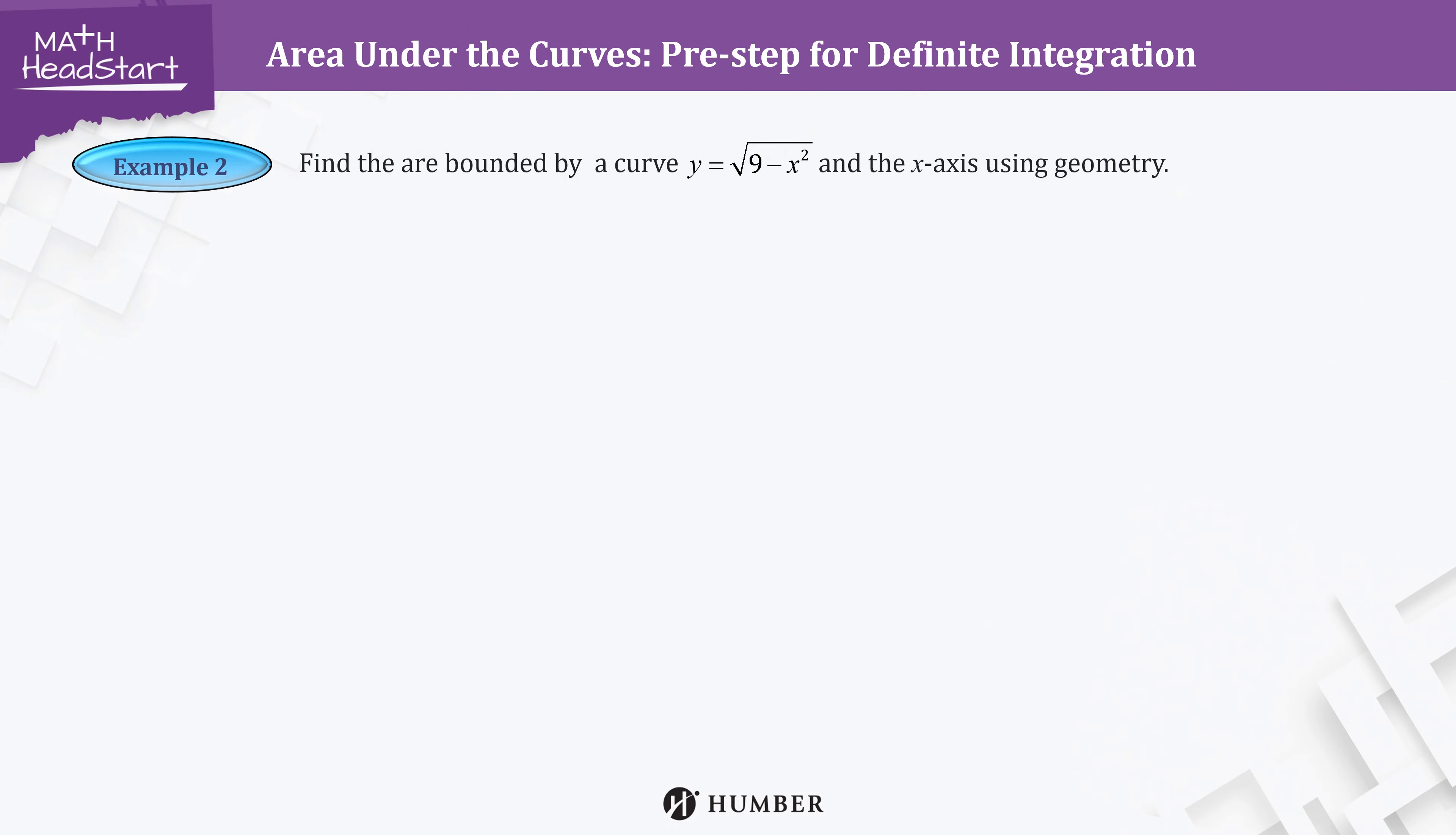Let's look at another example. Again, we need to sketch a curve. It is not a familiar function, so we try to square both sides to get y² = 9 - x². We then rearrange the equation to get x² + y² = 3².